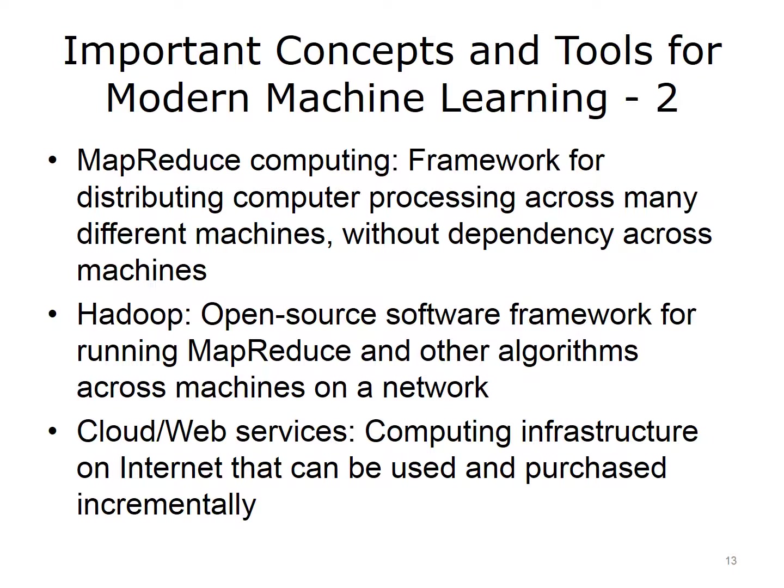There are some other important concepts and tools in modern machine learning. One is MapReduce Computing, which provides a framework for distributing computer processing across many different computers, including those across the Internet, with no dependency of the processing on one machine from another, enabling parallel processing on many machines. Hadoop is an open-source software framework that allows the running of MapReduce and other algorithms widely distributed across computer networks, including across the Internet. We may also hear about cloud or web services, where there is a computing infrastructure on the Internet that can be used and purchased incrementally.